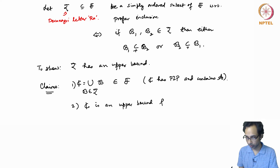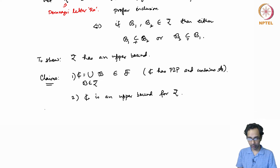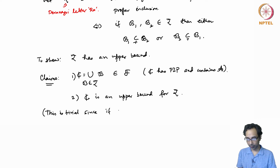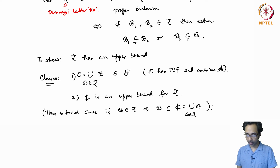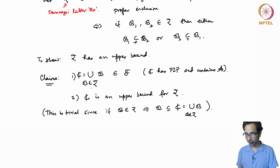The second claim is that C is an upper bound for ρ, and this is trivial: since if B belongs to ρ, then B is a subset of the union of all collections in ρ, which is C. Therefore C is an upper bound for ρ, and we only have to show the first claim.